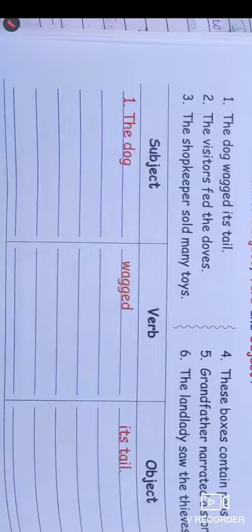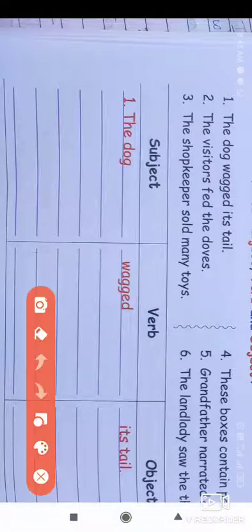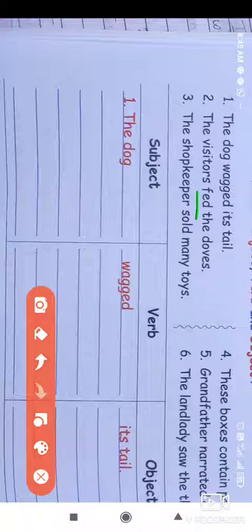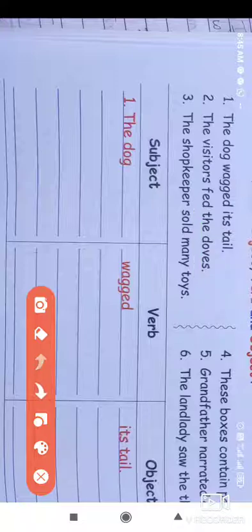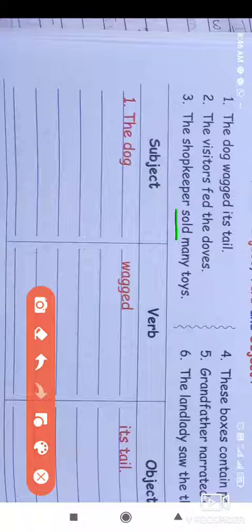We have to complete the answers in the same way. The second sentence: 'The visitor fed the doves.' The subject is the visitor, fed is the verb, and the doves are the object. Next sentence: 'The shopkeeper sold many toys.' Shopkeeper is the subject, sold is the verb, and many toys is the object.